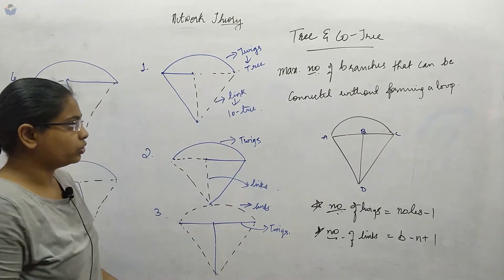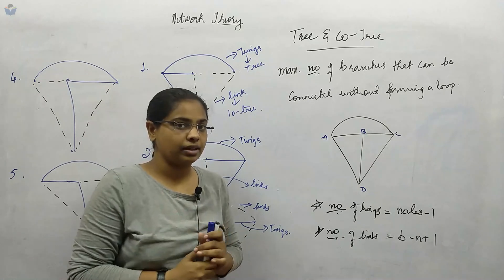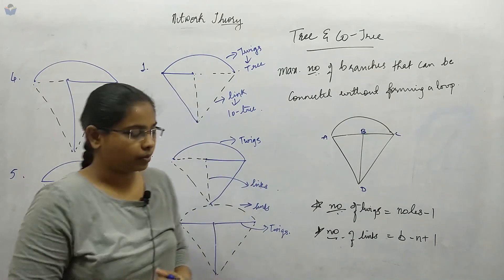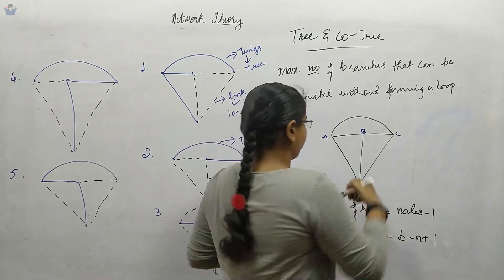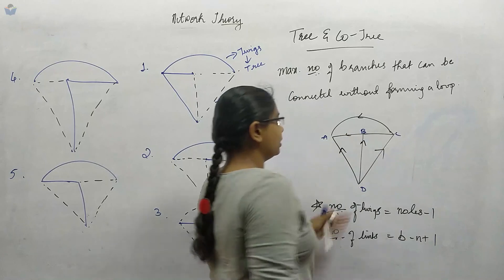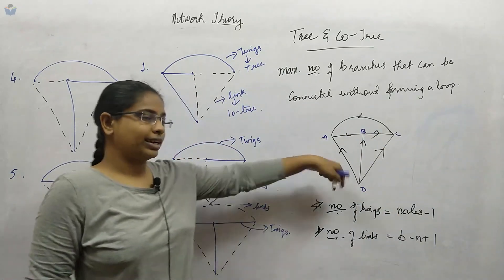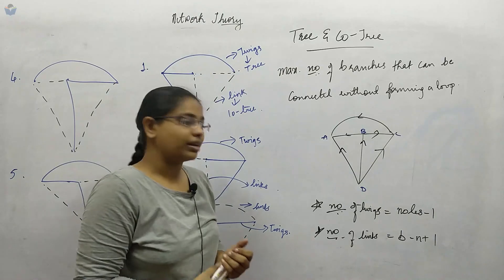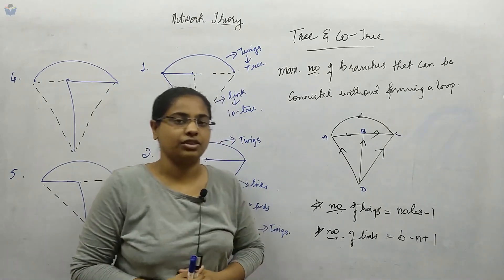Next, we are going to learn about the tie-set matrix, cut-set matrix, and incidence matrix. This is a non-oriented graph, and if you put arrows you get the oriented graph. Through the oriented graph only, we will draw the matrices. We will see this in the next lecture. Thank you.